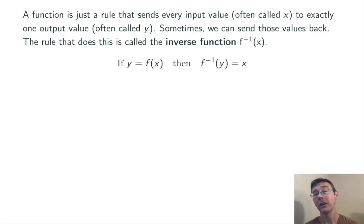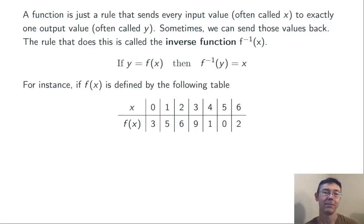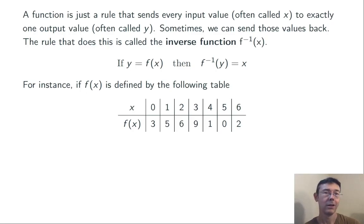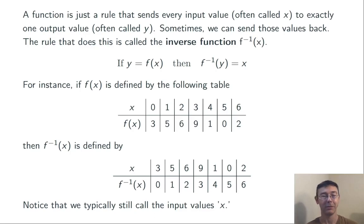Here's a slightly more formal definition: y equals f of x just means x equals f inverse of y. Here's an example — a function defined by a table of values. So f sends zero to three, one to five, and so on. The inverse function, f inverse, is going to send the values back: it sends three to zero, five to one, and so on.